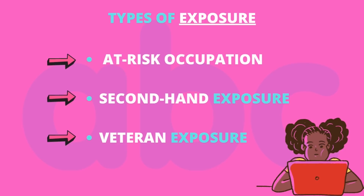Meanwhile, second-hand asbestos exposure is also very common. In this type, asbestos may be brought home on workers' hair, skin, and clothing, exposing loved ones to the fibers. Washing the clothes of a worker can also cause second-hand asbestos exposure.